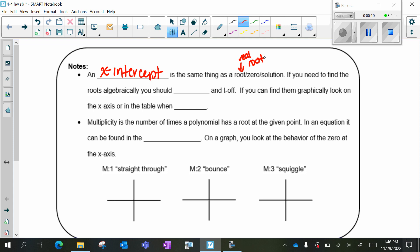If you need to find the roots algebraically we should factor and set it off. If you can find them graphically we look on the x-axis or in the table when y equals zero. For example, if I have positive two as my root in my table, it would be (2, 0).